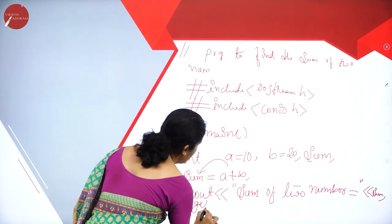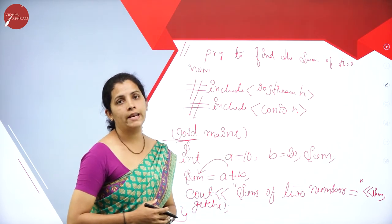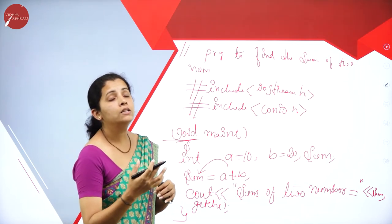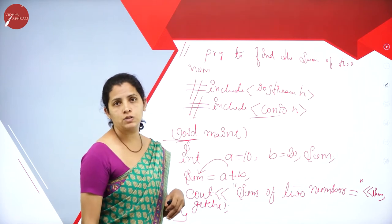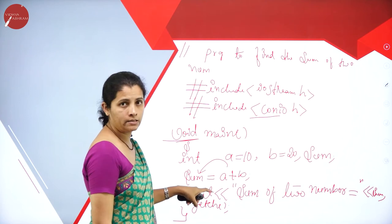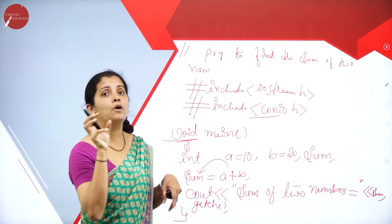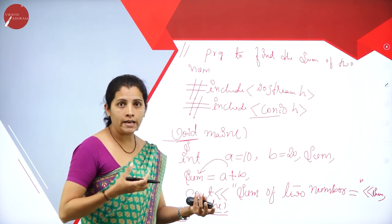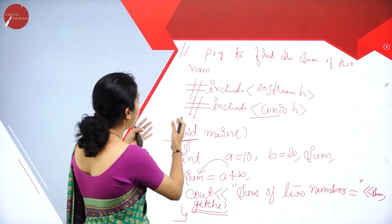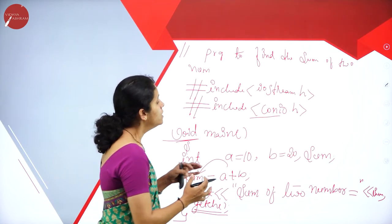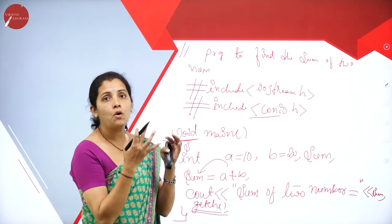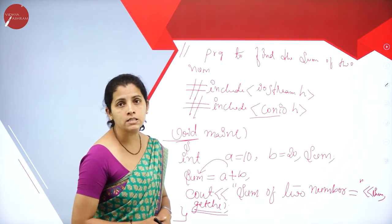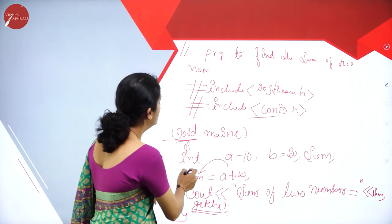Before closing the curly brace, I write getch(). To display the output, I require the console input output header file — that is why I included conio.h. The meaning of getch() is to get the character and print it on the screen. This is all about the C++ program. Now, according to the chapter, we focus on variables. The two input variables used are A and B, and to store the result I used sum. What kind of data type? It is integer.